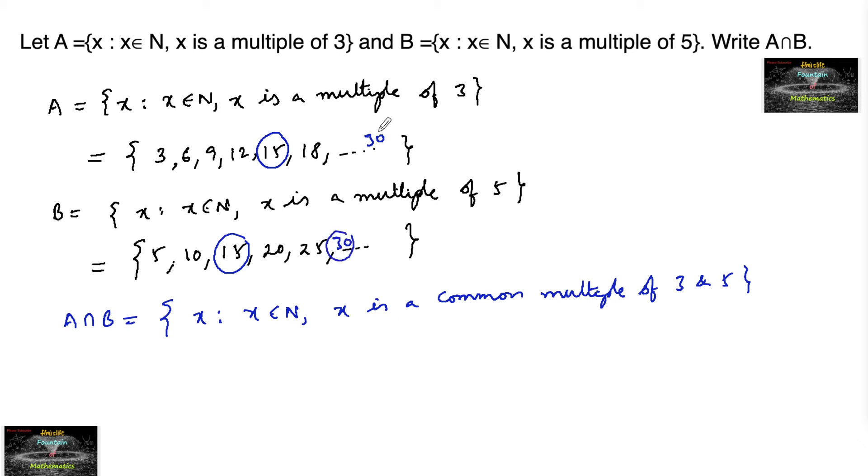So 30 is also common: 15, 30, 45 and so on. So we can write here the common multiples of 3 and 5 can be taken like 15, 30, 45, 60 and so on.